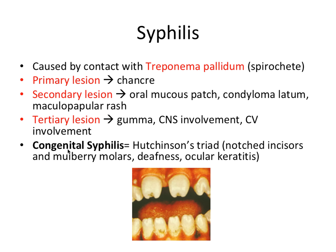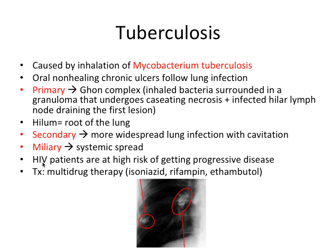Congenital syphilis presents with Hutchinson's triad, which includes notched incisors and mulberry molars affecting the teeth, deafness affecting the ears, and ocular keratitis affecting the eyes. So the triad refers to teeth, eyes, and ears being affected in a baby born to a mother with syphilis. This is pretty rare but can occur.